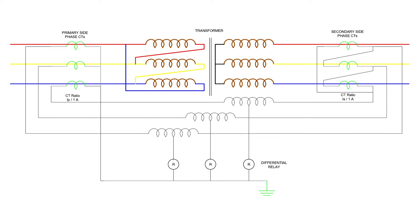Suppose you have a transformer which has primary rated current IP and secondary current IS. If you install a CT of ratio IP/1A at the primary side, and similarly a CT of ratio IS/1A at the secondary side of the transformer, the secondaries of both CTs are connected together such that their secondary currents oppose each other. In other words, the secondaries of both CTs are connected to the same current coil of a differential relay in such an opposite manner that there will be no resultant current in that coil under normal working conditions.